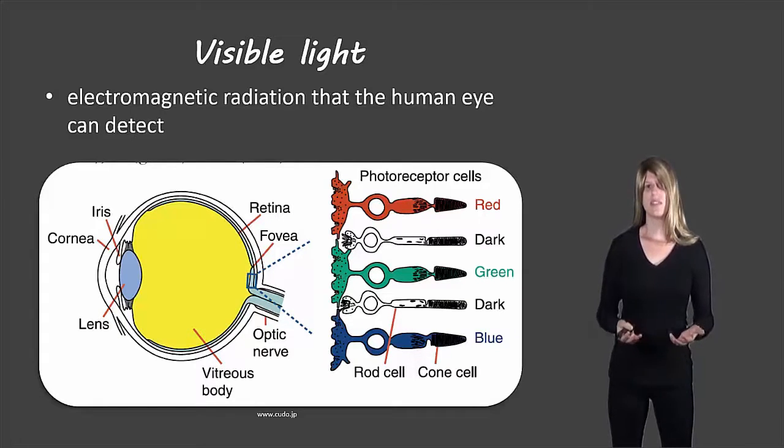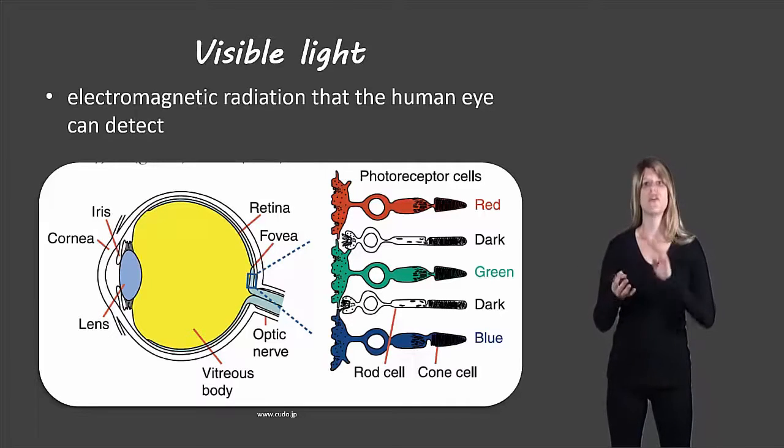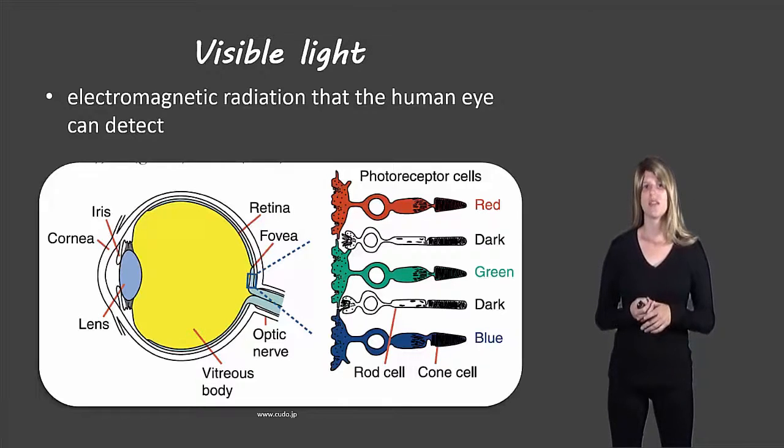Now if we wanted to see something that was another color, for example something that's yellow, then both the red and the green would both perceive that light. And the combination of those two put together, our brain interprets as yellow. So this is how we would see different colors. And then we see the details. We see things in black and white using our rod cells.